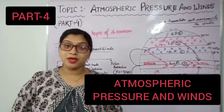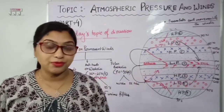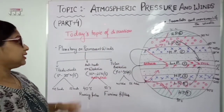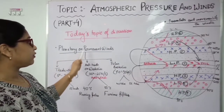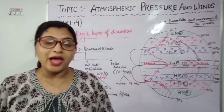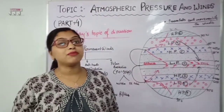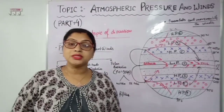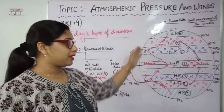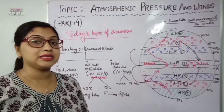Dear students, today I am here with the fourth part of the chapter atmospheric pressure and winds. Hope you have seen the last three parts. Here, this point which I am going to explain. First of all I have written here planetary or permanent winds. From where this term has come we should know, and before that some introductory part you also should know. Then you can link up with today's topic. In the last video I explained about these pressure belts, and I am also using the same diagram for explaining this wind.